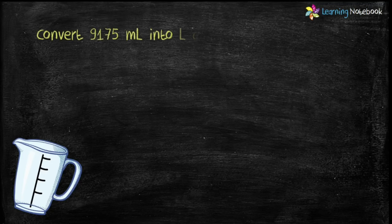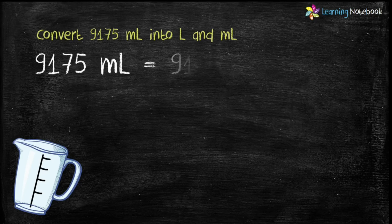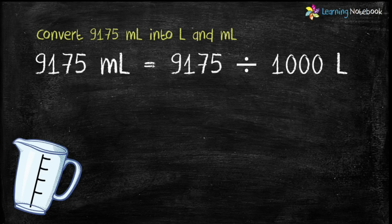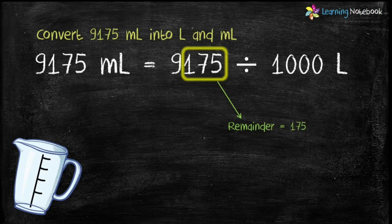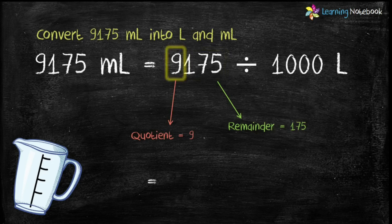Next question: convert 9175 milliliter into liters and milliliters. Dividing by 1000, the digits at ones, tens, and hundreds place become the remainder and the remaining digits become the quotient. So 175 is the remainder and 9 is the quotient. The answer is 9 liters 175 milliliter.